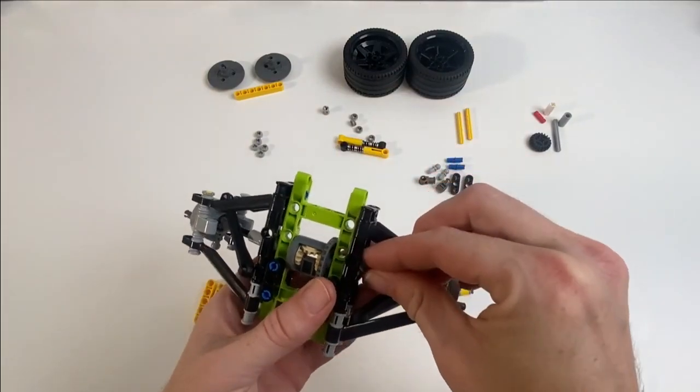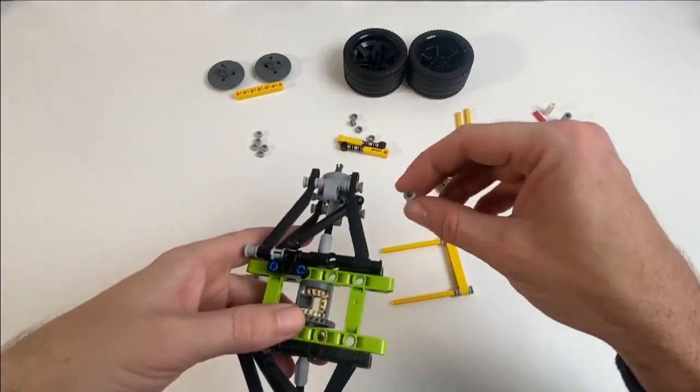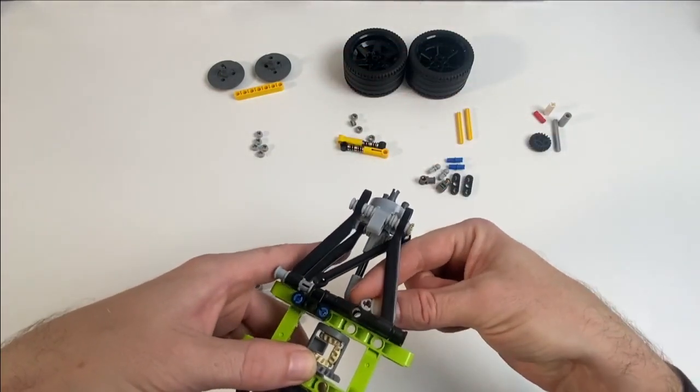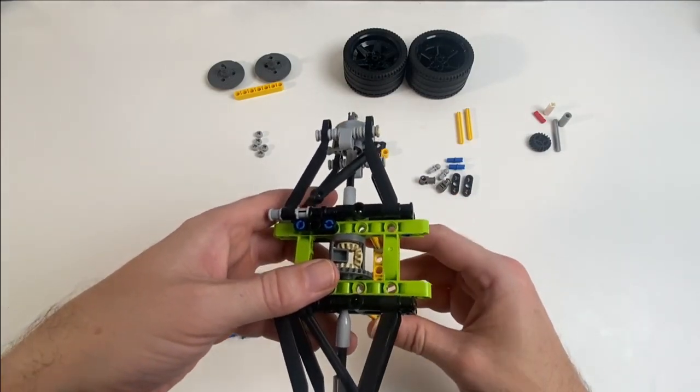These bushes here actually just help to hold those yellow axles into place within the frame to stop it from moving around. And again, give the whole thing just a little bit more stability. If you were building this into a vehicle yourself, you may want to do this slightly differently.